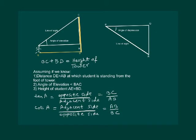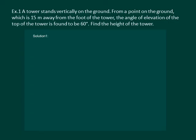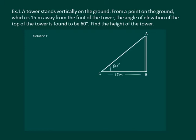Let us take up some examples and understand further. A tower stands vertically on the ground. From a point on the ground which is 15 meters away from the foot of the tower, the angle of elevation of the top of the tower is found to be 60 degrees. Find the height of the tower. Let us start by drawing a simple diagram to represent the problem. Here, let us represent the tower by AB. Let point C be 15 meters away from the foot of the tower. It is given that the angle of elevation of the top of the tower from point C is 60 degrees. We need to find the height of the tower — that is, we have to find AB.